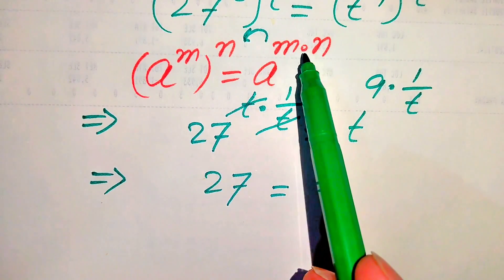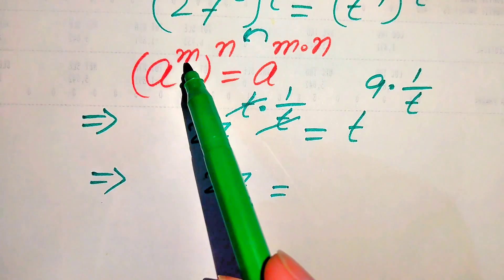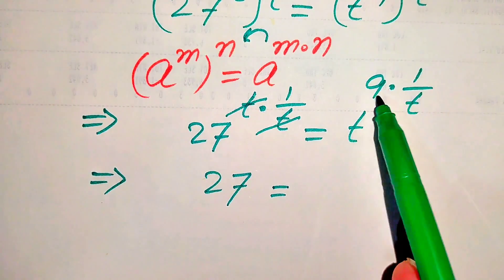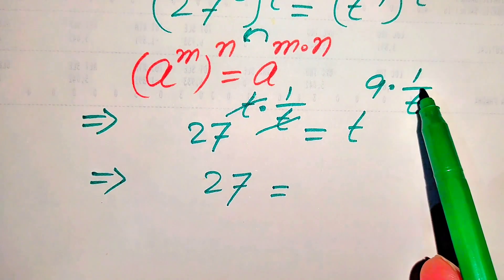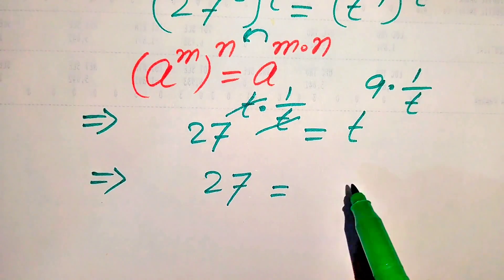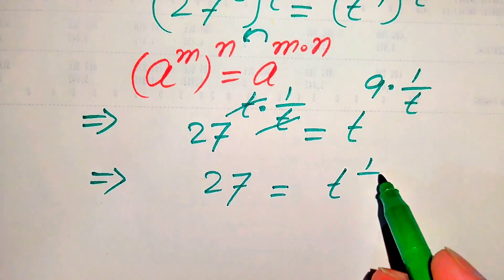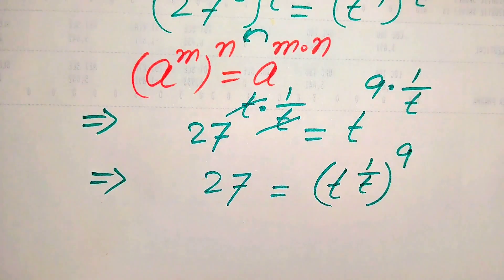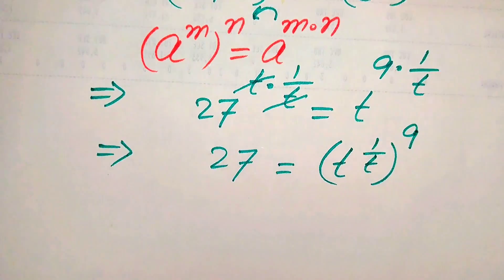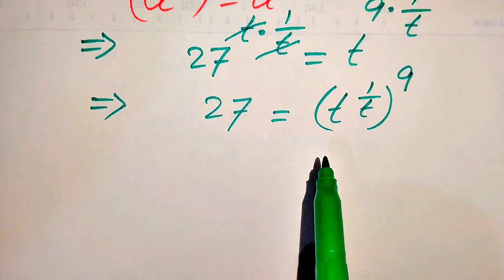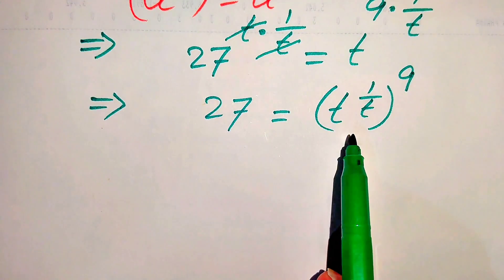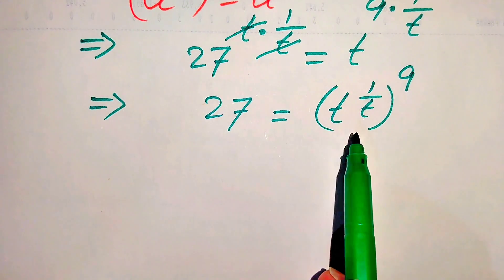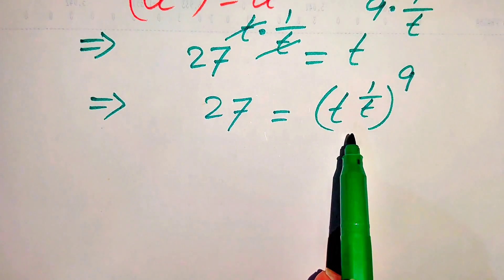We write the multiplication of these two terms in the form a to the power of exponent to the exponent. You see that these two terms are multiplied by each other — we move 1 over t inside the term in the form t to the power of 1 over t, and write its whole exponent as 9. So we have moved our variable terms to the right hand side, and now we move the constant term to the left hand side.